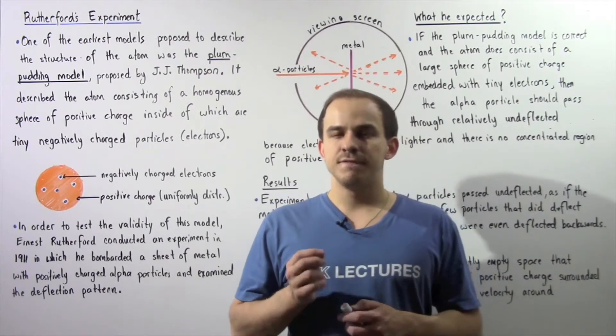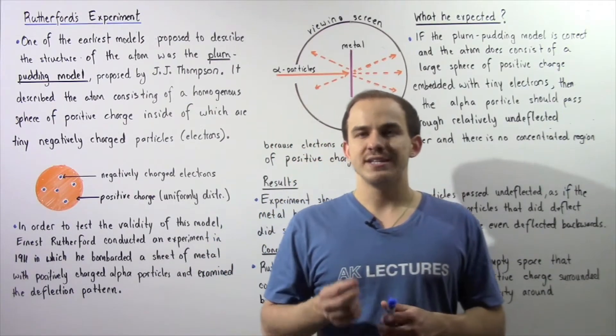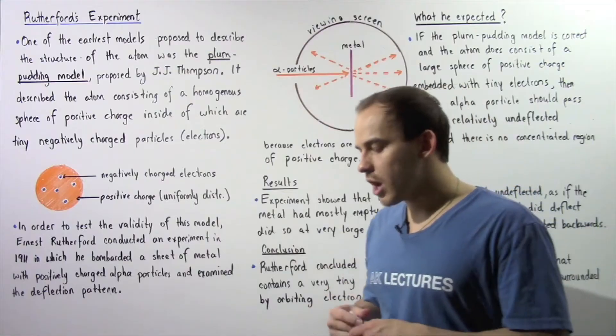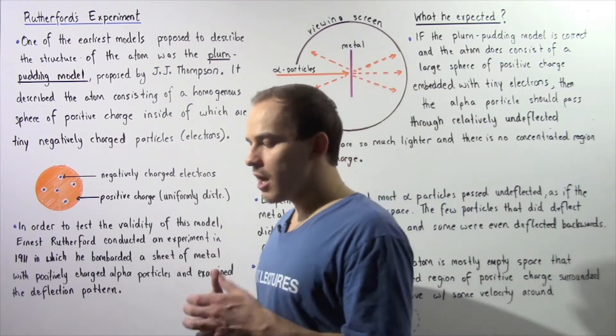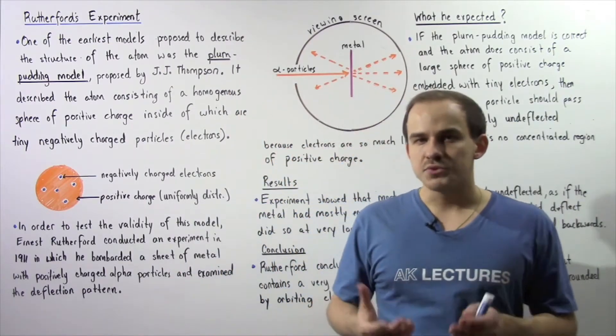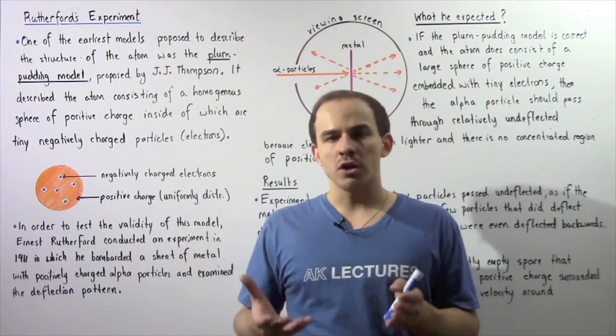In the 1890s, an English physicist by the name of JJ Thompson discovered what became known as the electron. Following his discovery, many scientists began to realize that atoms must have some sort of structure to them.